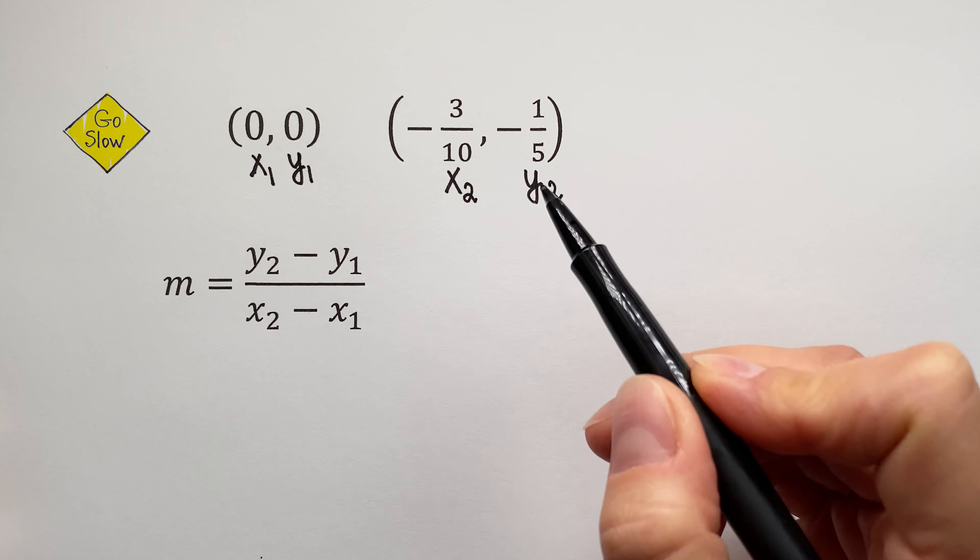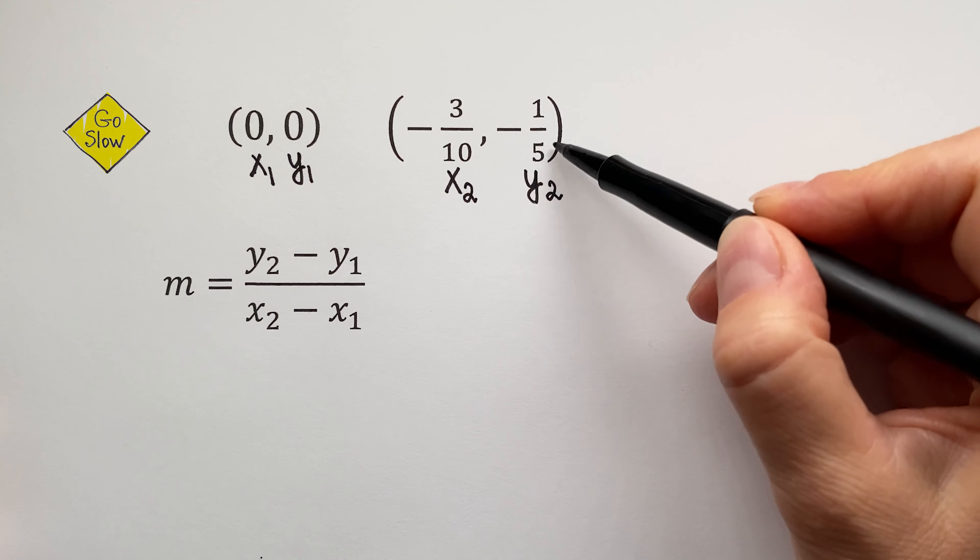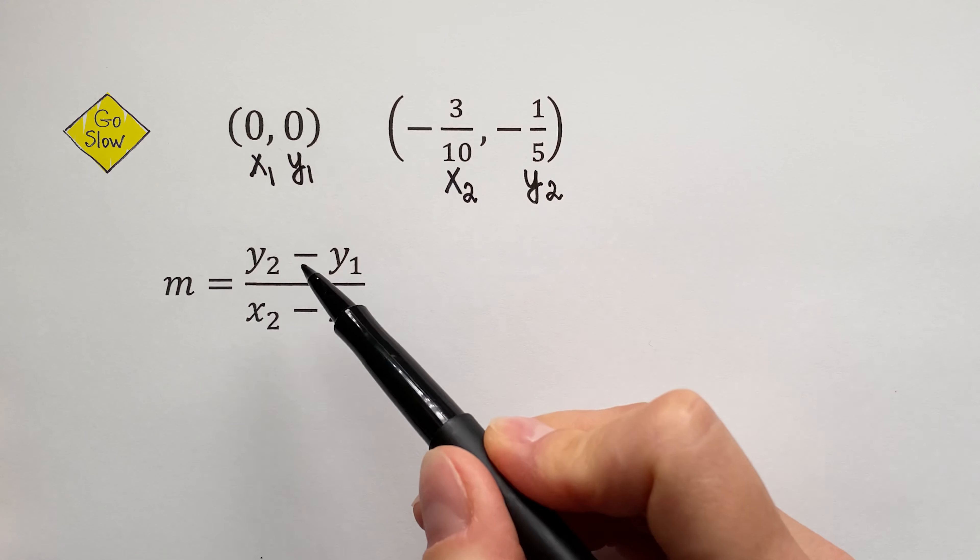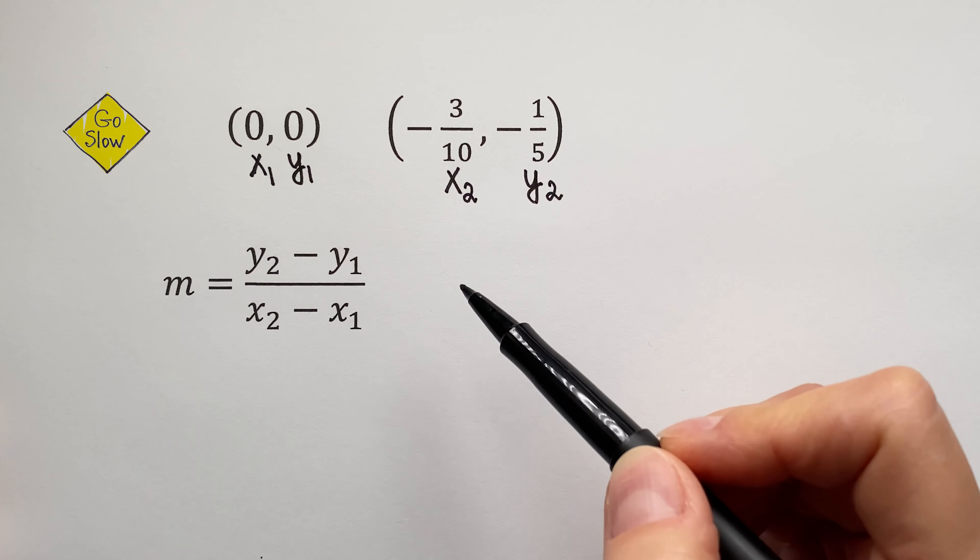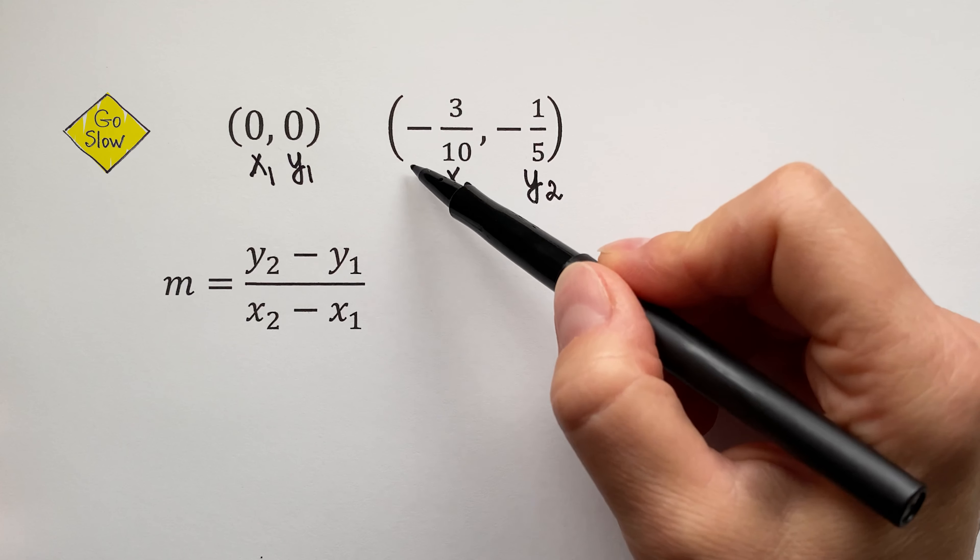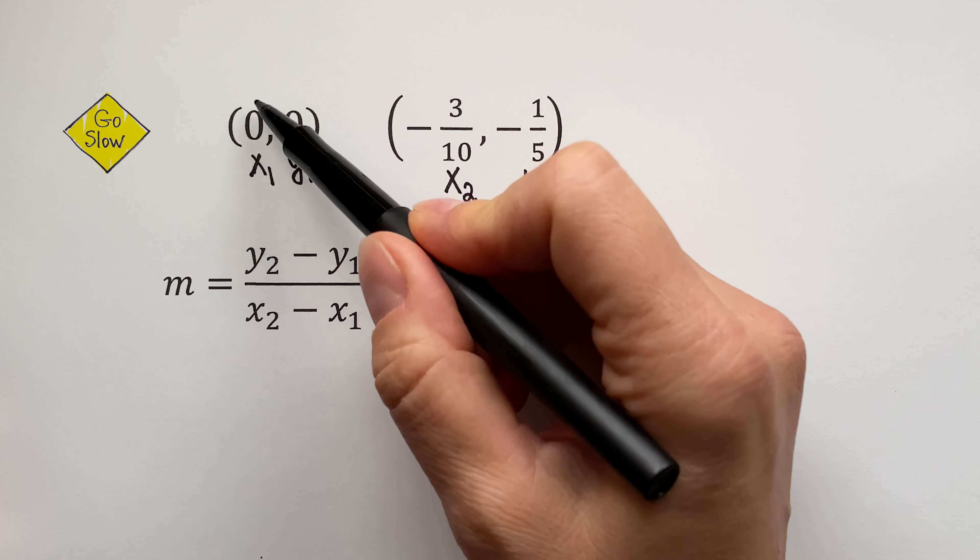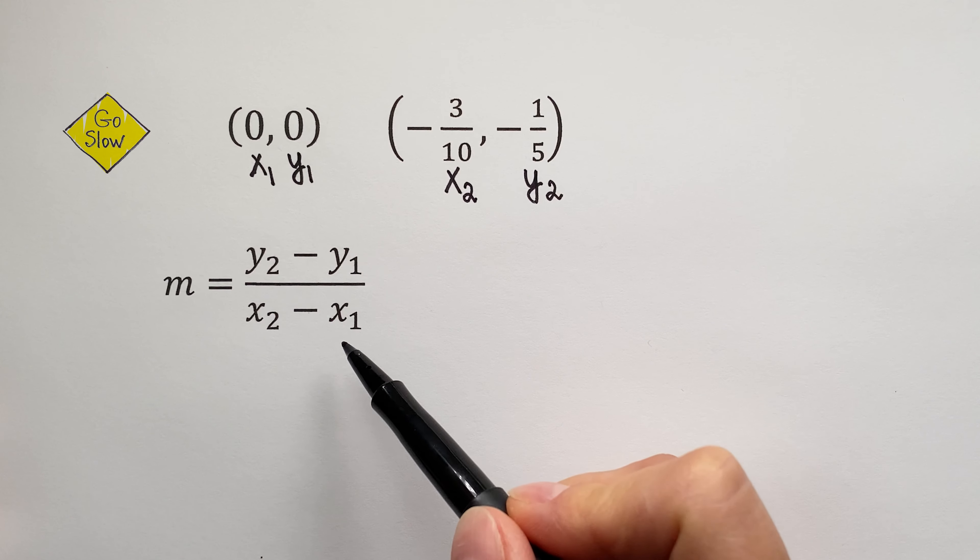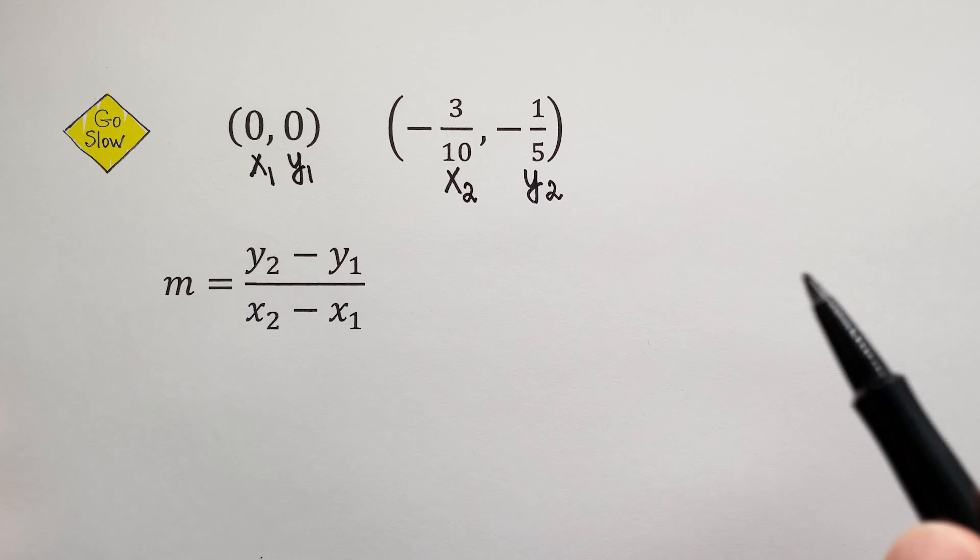So, to find the slope, you will take the two y-coordinates, plug them in, and subtract them. Then you will take the two x-coordinates, plug them in, and subtract them, and then you will calculate. Let's do it!